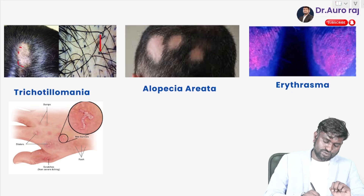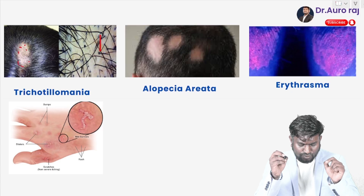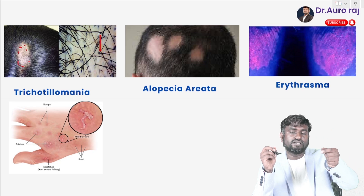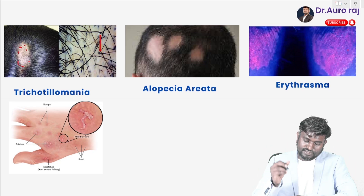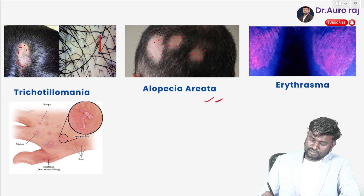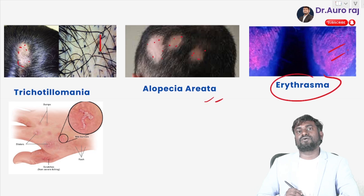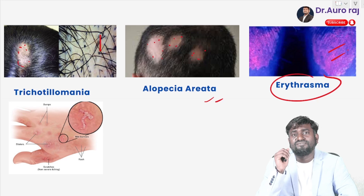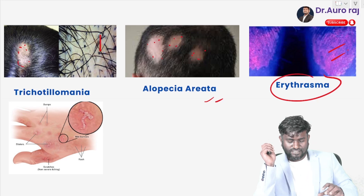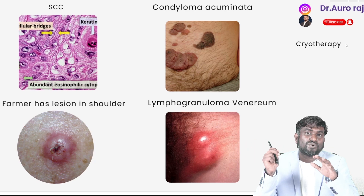This image is melanoma. This condition is trichotillomania, where the patient tries to pluck their own hair. This moth-eaten hair loss pattern is called alopecia areata. This skin condition is called erythrasma. Apologies — I'm having a bit of fever so my voice may be a little low.